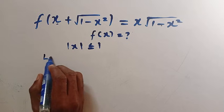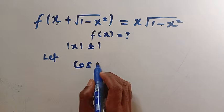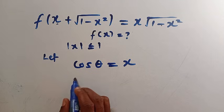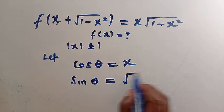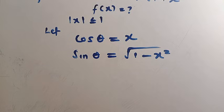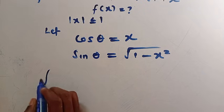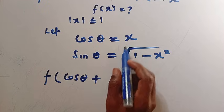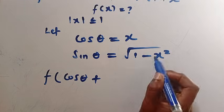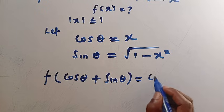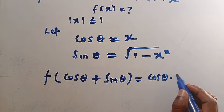We are going to let cos θ = x. So if cos θ = x, then we choose sin θ = √(1−x²). After choosing these two expressions, we replace both of them in the given function. So f(cos θ + sin θ) = cos θ · sin θ, since the left side becomes cos θ + sin θ and the right side becomes cos θ multiplied by sin θ.